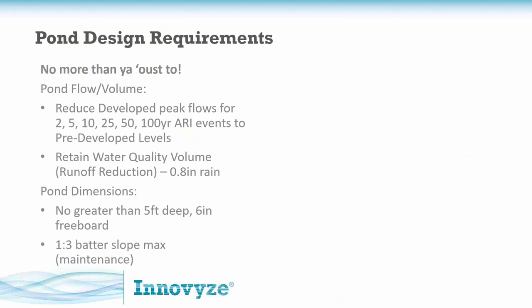Now for some really practical requirements — dimensions. In this case, the pond can't be more than five feet deep, and it needs a six-inch freeboard. There's also one other item: we can't have the side slopes — the batter of our facility — any steeper than a one-to-three slope. I talk about this pretty commonly, but for anyone who's looked at maintenance plans or a developed site, you need to usually be able to mow these facilities and do landscaping maintenance easily. So a one-to-three slope is really the maximum we're going to have.